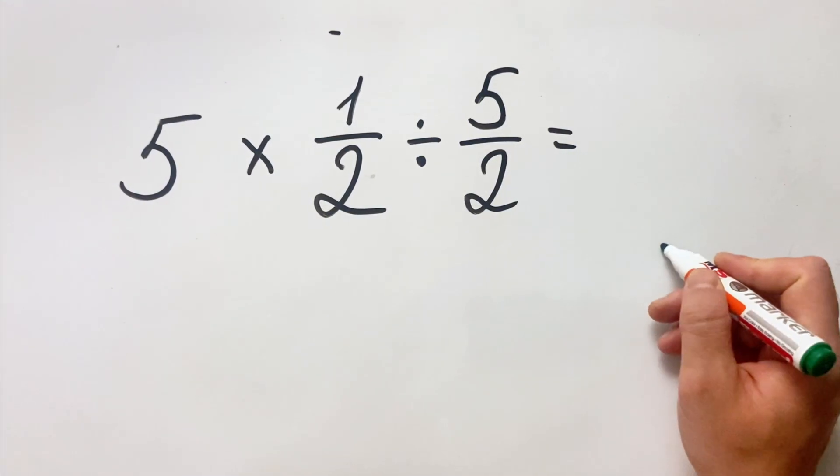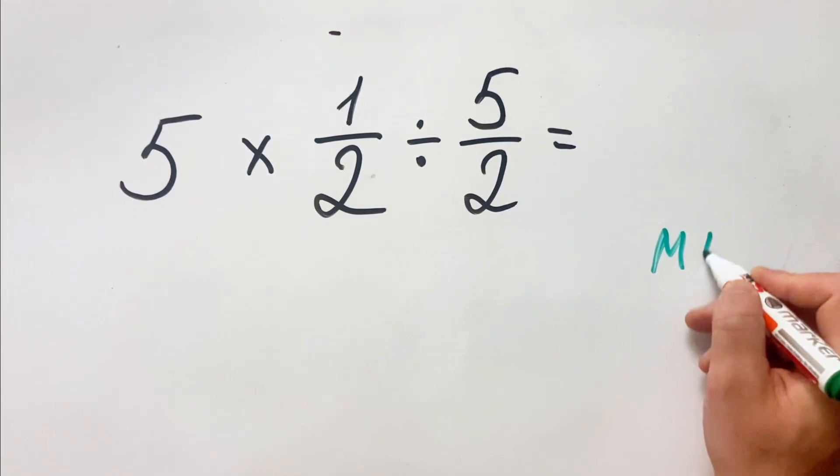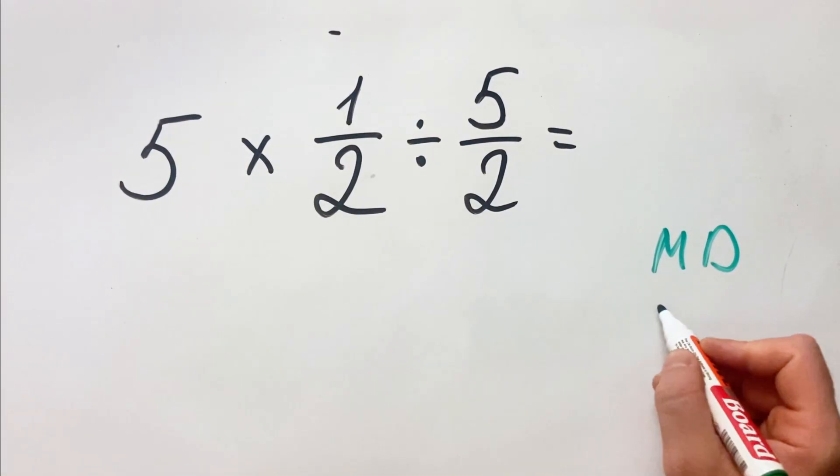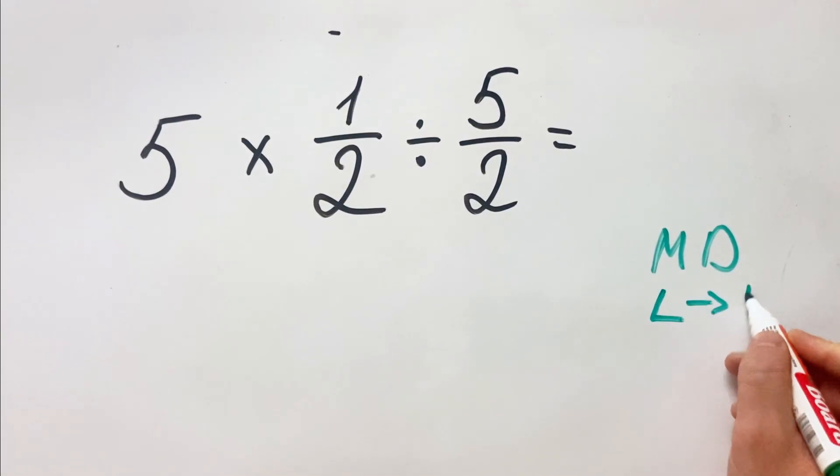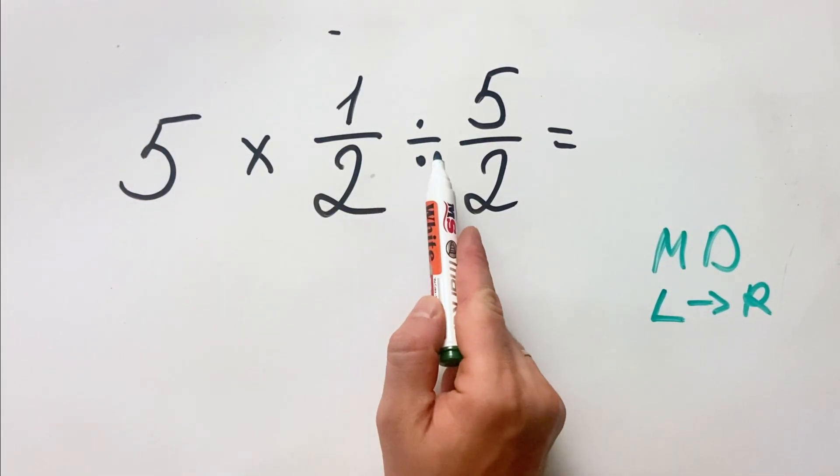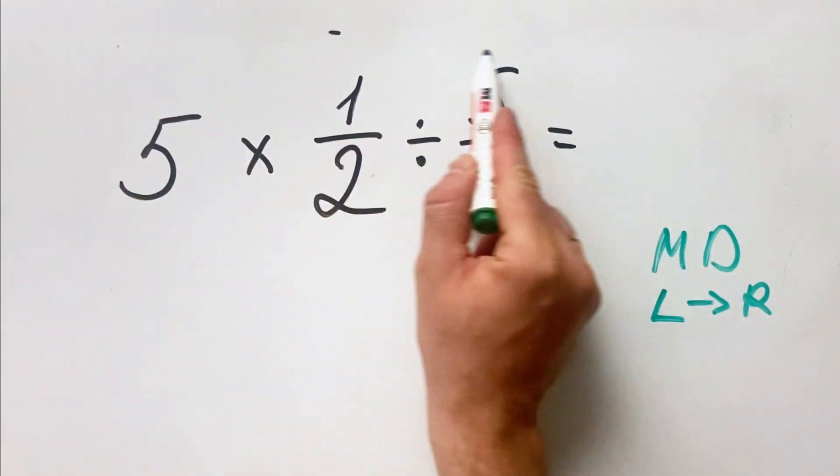One must remember the order of operations where multiplication and division have equal priorities and must be done from left to right. So to not get confused, we do the multiplication and division from left to right.